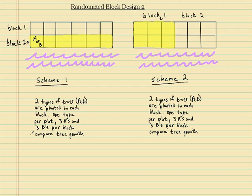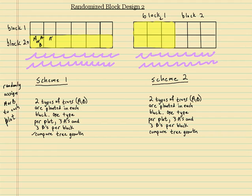We're going to randomly assign A or B to each plot. If the first three plots in a block get A, A, A, then those remaining plots have to be B, B, B. So you randomize within each block separately. For example, a block might end up A, B, A, B, A, B.